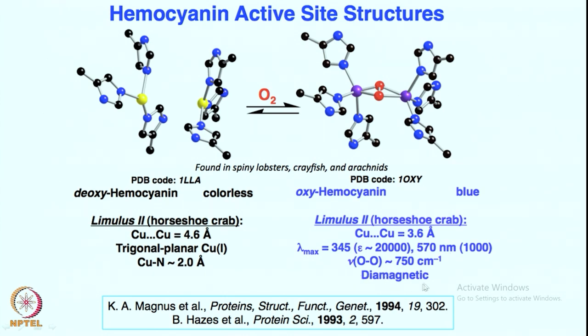This complex is diamagnetic, meaning that both of these coppers are now oxidized to copper(II). Each copper has given one electron to the oxygen center to make it a copper(II) peroxo moiety. This dicopper peroxo species has a copper-copper distance of 3.6 angstroms. From 4.6 angstroms, the distance shortened to 3.6 angstroms — it is almost breathing. It was far apart, and oxygen brings them relatively closer to each other.